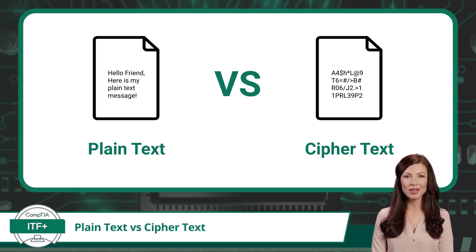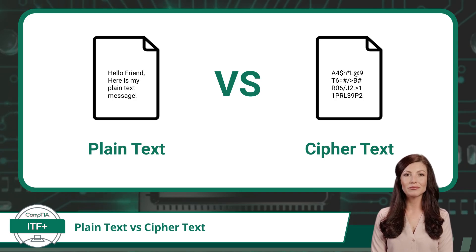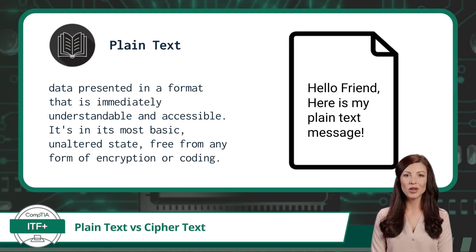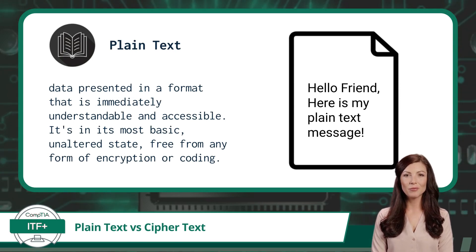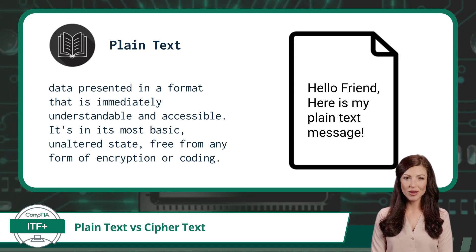Think of cipher text as a coded message. To the untrained eye, it appears as mere gibberish. This encryption ensures our data's confidentiality, shielding it from unwanted attention. To further define: plain text is data presented in a format that is immediately understandable and accessible — in its most basic, unaltered state, free from any form of encryption or coding, with no protective layers or barriers concealing its content.